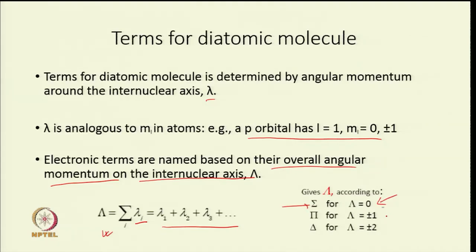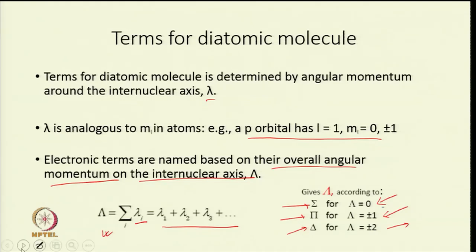If lambda equals 0, that corresponds to a sigma term. When lambda equals ±1, that corresponds to a pi term. When lambda is ±2, that corresponds to a delta term. This I have already discussed in the last lecture.